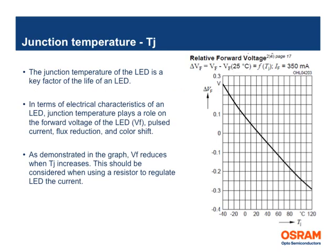Junction temperature of the LED is a key parameter that determines many of the LED behaviors including lifetime of an LED, light output, color, and forward voltage. Electrically speaking, higher the junction temperature, lower the forward voltage. This is a key parameter especially when a resistor is used to regulate the LED current.